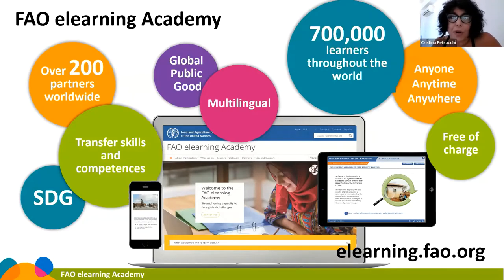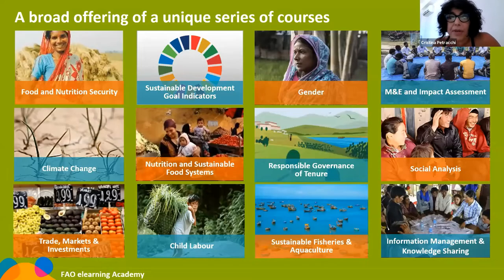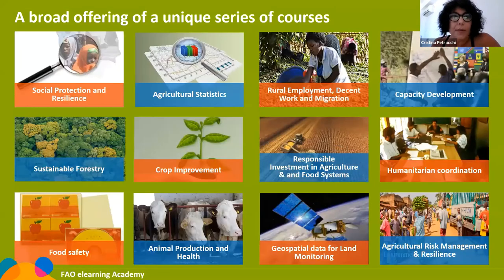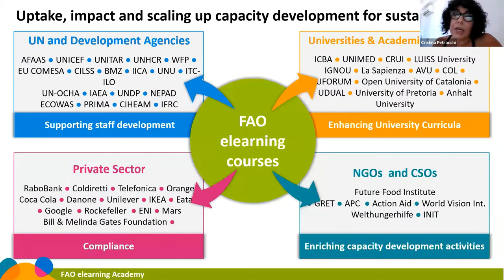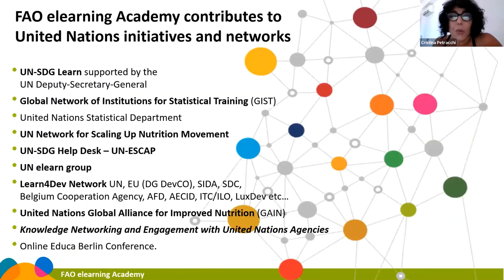So far we have reached about 700,000 learners and cover a number of various thematic areas: climate change, sustainable food systems, nutrition, responsible investments, sustainable fisheries, sustainable forestry, soil restoration, and forest genetic resources. We work with over 200 partners and also with a number of universities, creating masters and postgraduate degrees where universities integrate our courses. We share these courses with various partners for their capacity development activities and contribute to UN initiatives and networks.